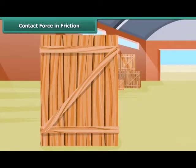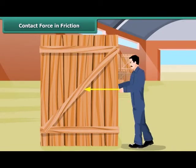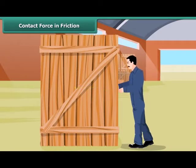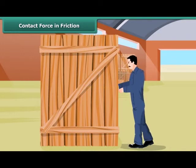It is interesting to learn that friction depends on the amount of contact force pushing the two surfaces together. Here, a man is trying to push a heavy box, but the box is not moving. When the box is pushed, the bottom of the box and the floor rub against one another and friction comes into play, which resists the motion.